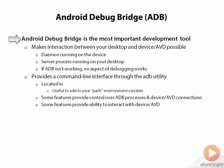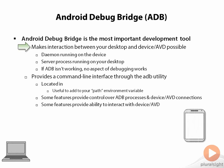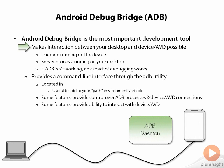The first tool we're going to look at is the Android Debug Bridge, or ADB. It is far and away the most important development tool we have. We don't necessarily interact with it a lot, but it's very important because it makes interaction between our desktop and our device possible. When we're working on our desktop, we've got that device hooked up by a USB connection. If it's a virtual device, we need to have that ability to communicate. ADB provides a daemon — a server process on the device — and a server process on our desktop, providing that connection between them. If ADB isn't working, nothing works.